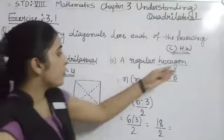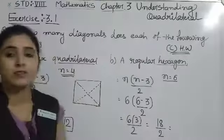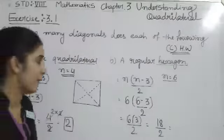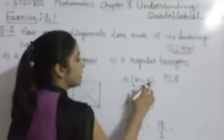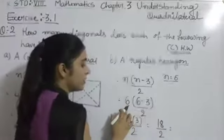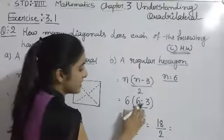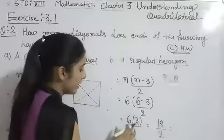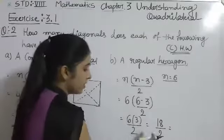We have the formula n(n-3)/2. Here n equals 6, so 6(6-3)/2. 6 minus 3 equals 3, then 6 times 3 is 18 divided by 2.